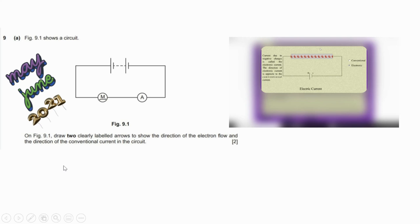Hi everyone, this is May/June 2021 question 9(a). Figure 9.1 shows a circuit. In Figure 9.1, draw two clearly labeled arrows to show the direction of the electron flow and the direction of the conventional current in the circuit. Two marks.